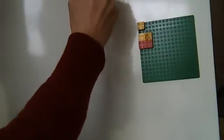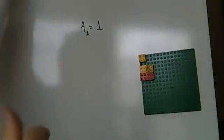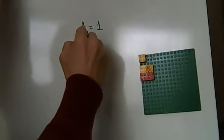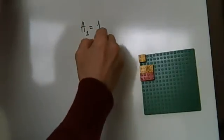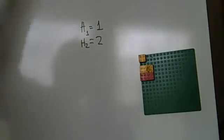So the first Hamachandra number is equal to one because that's what that's supposed to be. The second Hamachandra number is equal to two. That's the number of sentences you can make that have a total duration of two.